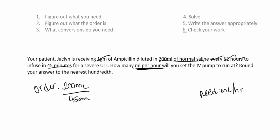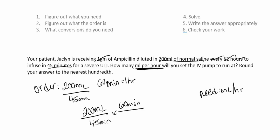We need to convert from minutes to hours, so 60 minutes equals one hour. We start with 200 mL over 45 minutes. Put 60 minutes on top and one hour on the bottom. Minutes cross off, and we're left with milliliters per hour — exactly what we want. Multiply across the top, multiply across the bottom, and divide. The answer is 266.67 milliliters per hour.